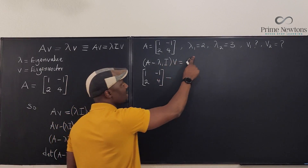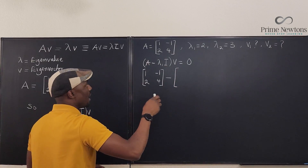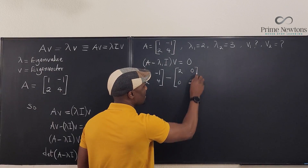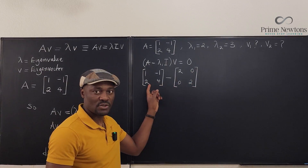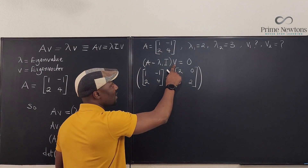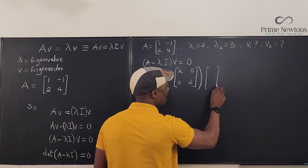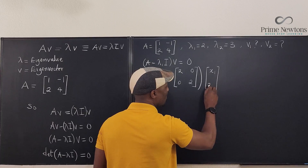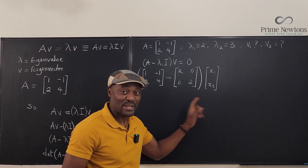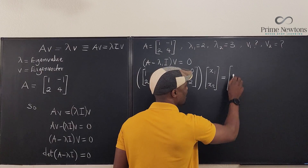Substituting λ₁ = 2, we compute 2 times the identity matrix: [2, 0; 0, 2]. We represent the unknown eigenvector v as a column matrix [x₁; x₂]. So we have ([1,-1;2,4] - [2,0;0,2]) times [x₁; x₂] = [0; 0].